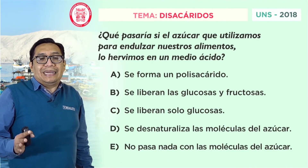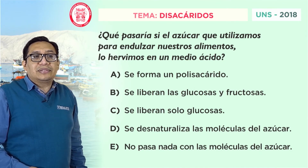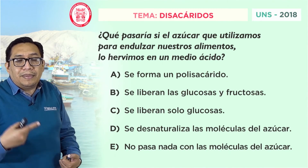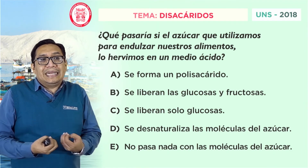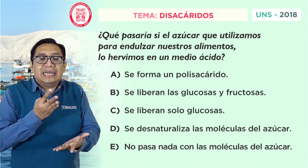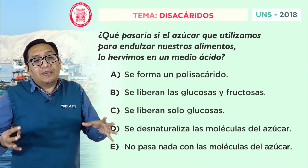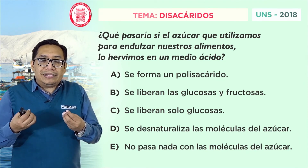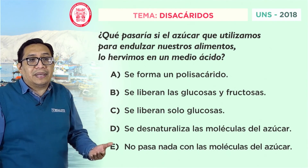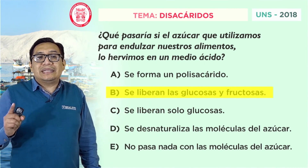Veamos una pregunta del examen de admisión de la Universidad Nacional del Santa del año 2018. ¿Qué pasaría si el azúcar que usamos para endulzar nuestros alimentos, o sea la sacarosa, la herviríamos en un medio ácido? Si tú hierves al azúcar, ese procedimiento es muy usado para formar los caramelos, y le agregas una sustancia ácida, de inmediato se rompen los enlaces. El enlace alfa 1-2, que mantenía unido a la glucosa más la fructosa, se rompe y se forma una solución llamada azúcar invertido, que es mucho más dulce que estando como disacárido. La respuesta correcta está en la alternativa B: se liberan glucosas y fructosas.